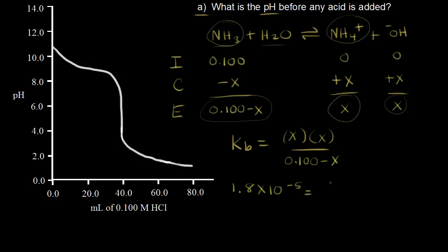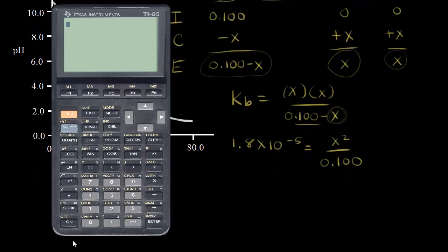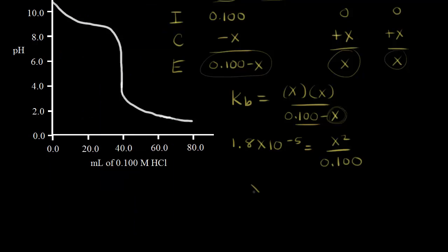The Kb for ammonia is 1.8 times 10 to the negative 5. That equals X squared over 0.1 minus X. We assume X is really small compared to 0.1, so 0.1 minus X is approximately 0.1, which makes the math easier. Solving for X: the square root of (1.8 × 10⁻⁵ times 0.1) gives X equal to 0.0013.